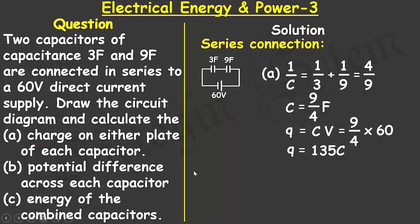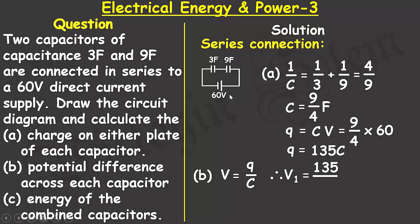For part (b), to find the potential difference, I rearrange Q = CV to get V = Q/C. The potential difference across the first capacitor (3 farad) is V₁ = 135/3 = 45 volts.